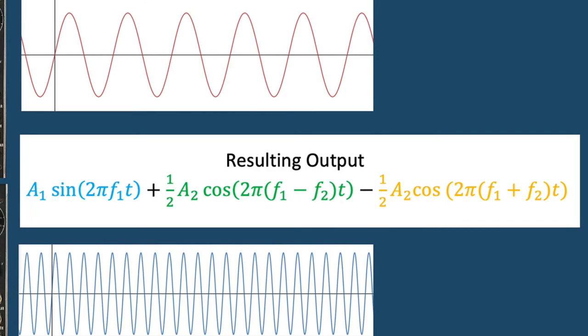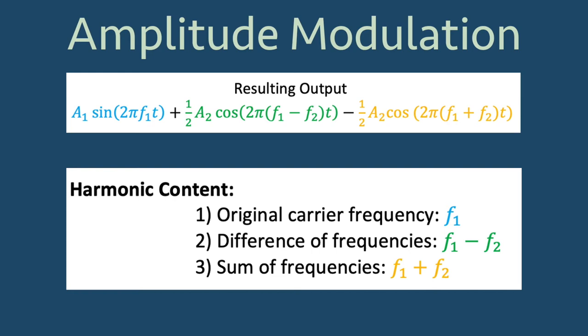When we use sine waves in amplitude modulation, the resulting output has three frequencies making up its harmonic content. First, the original carrier frequency f1, second, the difference of frequencies f1 minus f2, and third, the sum of frequencies f1 plus f2.